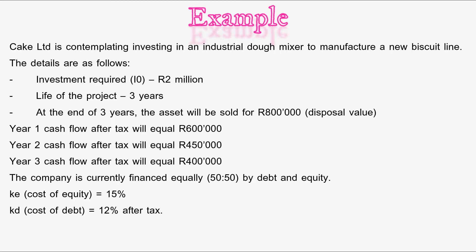Cake Limited is contemplating investing in an industrial dough mixer to manufacture a new biscuit line. The investment required will be two million rand, the life of the project is three years, and at the end of three years the asset will be sold for eight hundred thousand rand — that's the disposal value. Year one cash flow after tax equals six hundred thousand rand, year two equals four hundred and fifty thousand rand, and year three equals four hundred thousand rand. The company is currently financed equally: fifty percent by debt and fifty percent by equity. The cost of equity is fifteen percent and the cost of debt is twelve percent after tax.